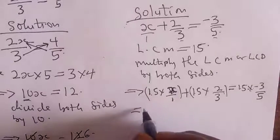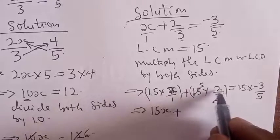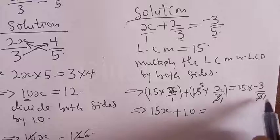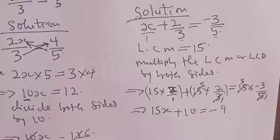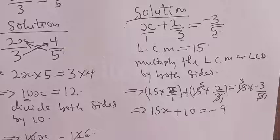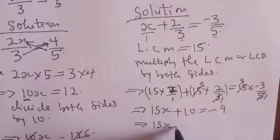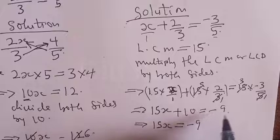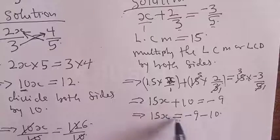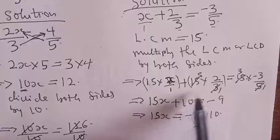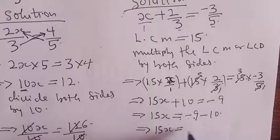This implies: 15x plus — 5 goes into 15 three times, so 3 times 2 gives 10 — is equal to 3 times minus 3, which is minus 9. From this equation we have been able to get rid of the denominator. So we have 15x plus 10 equals minus 9. Moving the plus 10 to the other side gives minus 10. Therefore 15x equals minus 9 minus 10, which is minus 19.